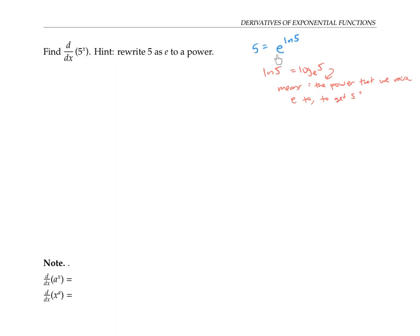If five is the same thing as e to the ln five, then five to the x is the same thing as e to the ln five, raised to the x power. By properties of exponents, when I take a power to a power, I multiply the exponents. So this can be written as e to the ln five times x.